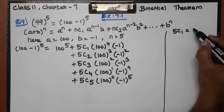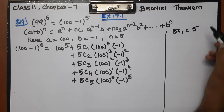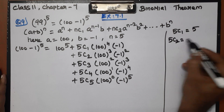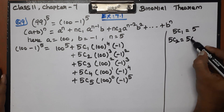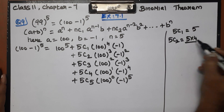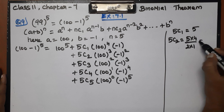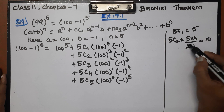Evaluating the combination values: 5C3 equals 5 factorial over 3 factorial 2 factorial, which gives 10. 5C1 equals 5, 5C2 equals 10, 5C4 equals 5, and 5C5 equals 1.